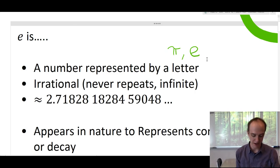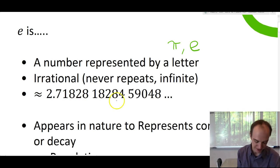Just like pi, E is irrational. It never repeats. It's infinite. It goes on forever. Here's the first about 15 decimal places of E.